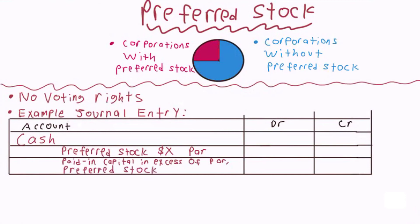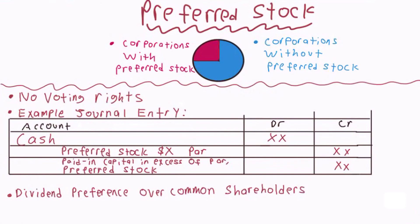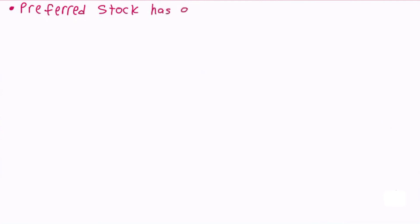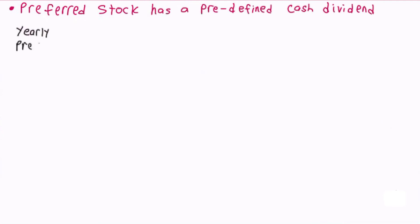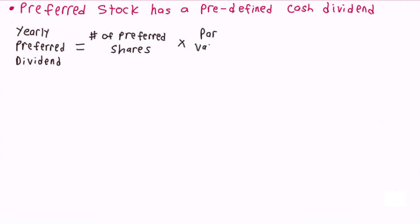Preferred shareholders typically have a preference for receiving dividends before common shareholders. Unlike common stock, preferred stock has a predefined dividend amount specified by a percentage listed along with the preferred shares. To calculate the yearly amount of the preferred dividend for a corporation, multiply the number of preferred shares by the par value and then by the percent.